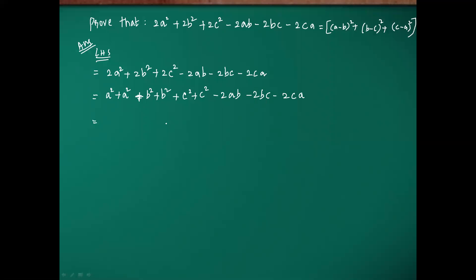First I am taking -2ab. For that, one a² and one b² are required. So a² + b² - 2ab is obtained. Next I am taking -2bc. For that, another b² and one c² are required. So b² + c² - 2bc is formed.